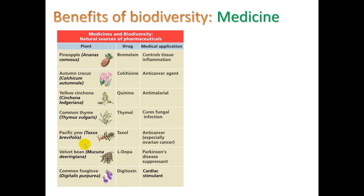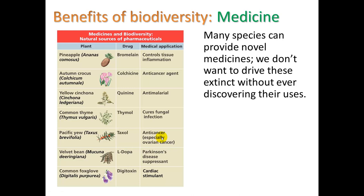Medicine is also an important benefit of biodiversity. Take a look at all these drugs — they all come from a plant. For example, a drug from pineapple can control inflammation. And Taxol, which comes from the Pacific Yew, is an anti-cancer drug, especially effective against ovarian cancer. We want to make sure that because many of these species provide novel medicines, we don't drive them extinct without ever discovering their uses, as they may be a potential cure for AIDS, cancer, or other ailments.